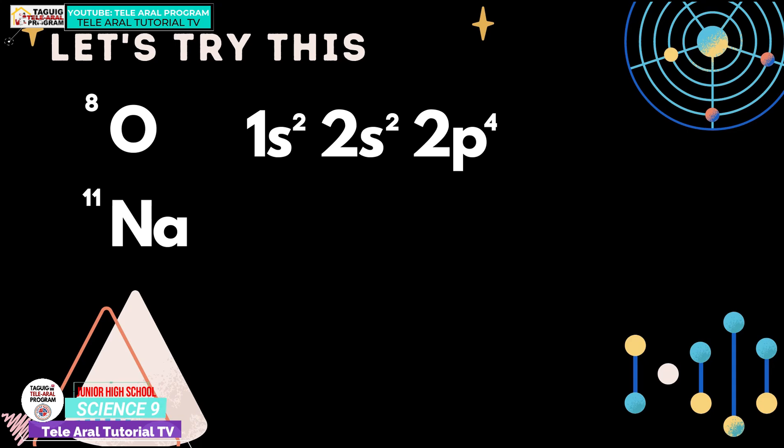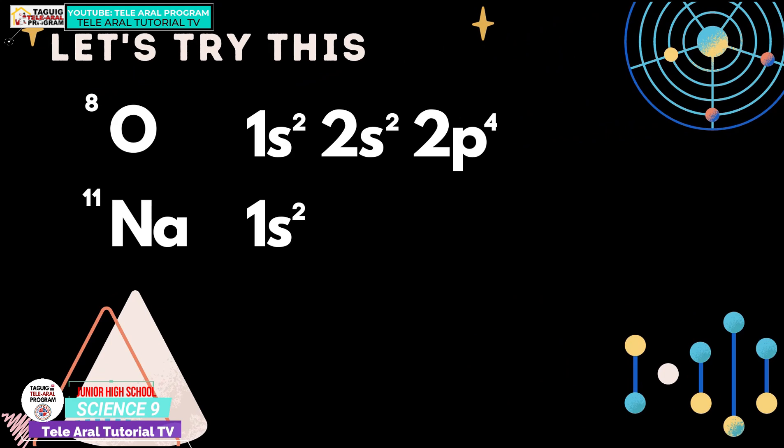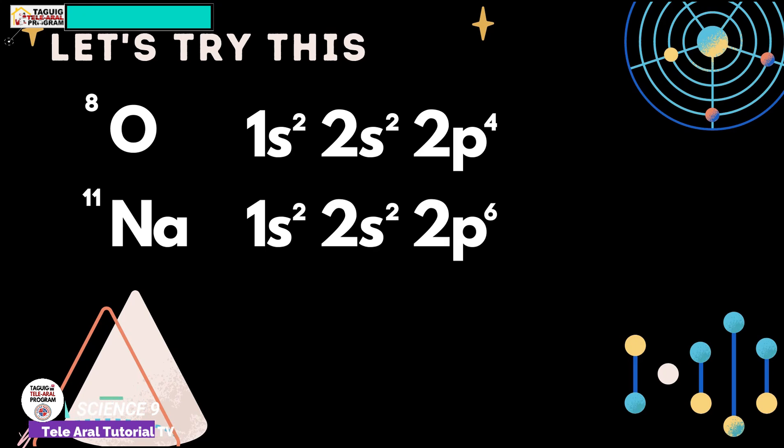Let's also try for sodium. Sodium has 11 electrons to be distributed. We start again with 1s2 to fill up the sublevel. Next is 2s2. Filled up already. Next is 2p6. Look at the distributed electrons. We now have 10 electrons distributed. We only have 1 electron left. So, the last sublevel is 3s1. There you go! That is how you write the electron configuration.